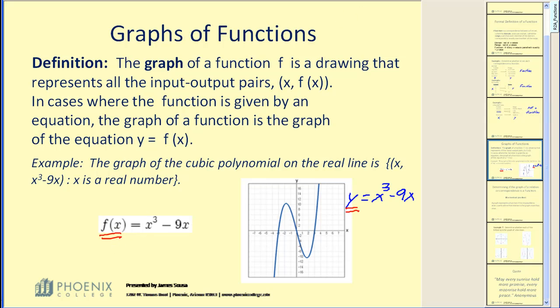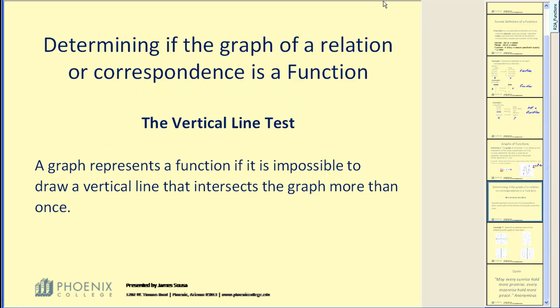Now when you do have the graph and you want to determine if it is a function, there's a special test. That test is called the vertical line test. A graph represents a function if it is impossible to draw a vertical line that intersects the graph more than once. Let's take a look at several graphs and test them.